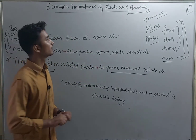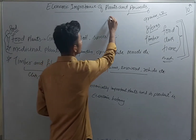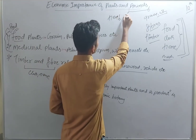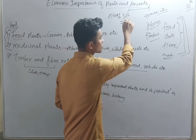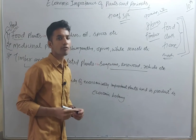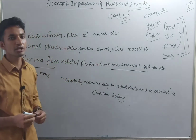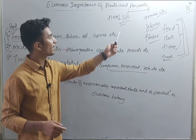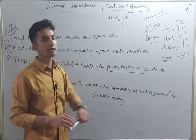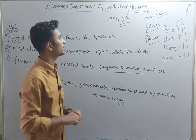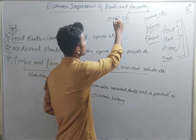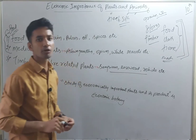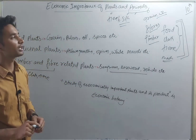We have animals like honeybee and silkworm. They are also produced for commercial purposes. Honeybee produces honey, and silkworm is used for cloth production as well. So plants and animals both are very important for life on earth.